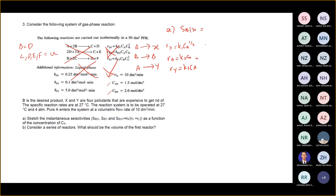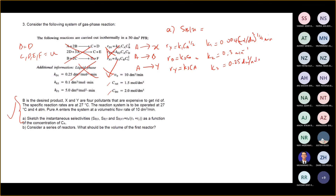Given: K1 = 0.004 mol/dm³ half/min, K2 = 0.3 per minute, and K3 = 0.25 dm³/mol per minute. Sorry about pasting the wrong equations earlier — this is the correct one.